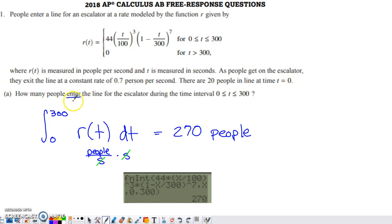Part A says how many people enter the line for the escalator during the time interval 0 to 300. We don't need to take into account how many we began with or how many exited the line. All we need to know is how many entered the line.